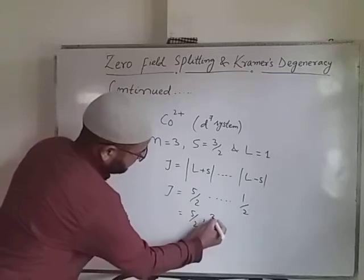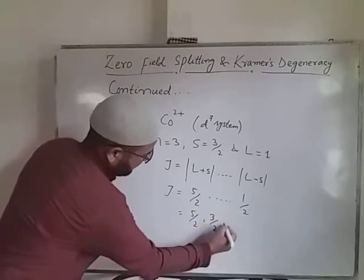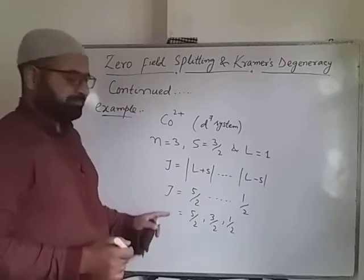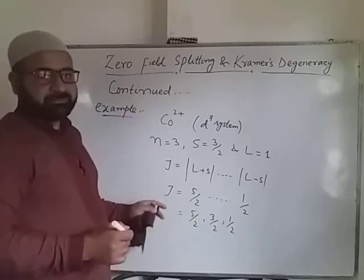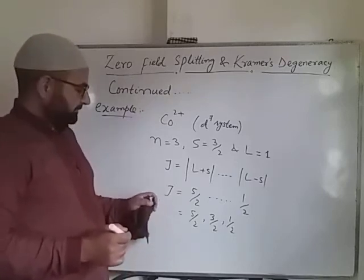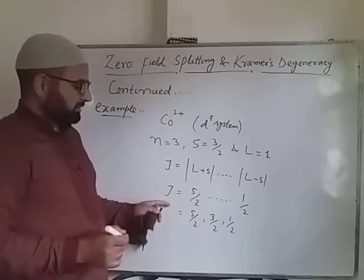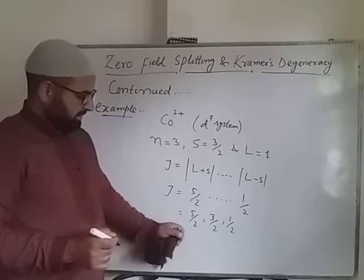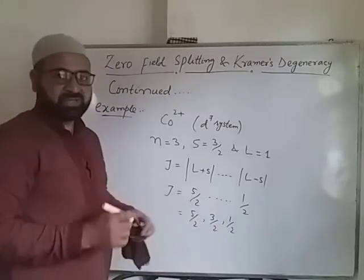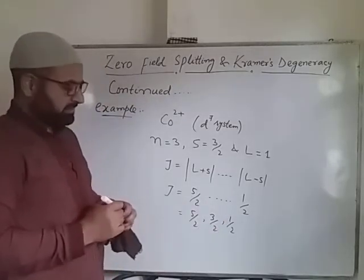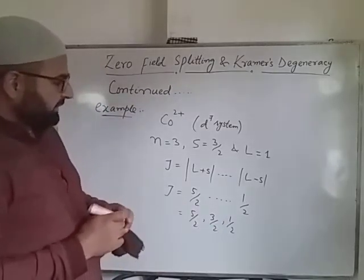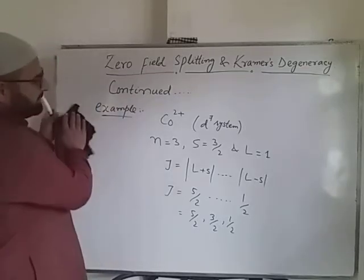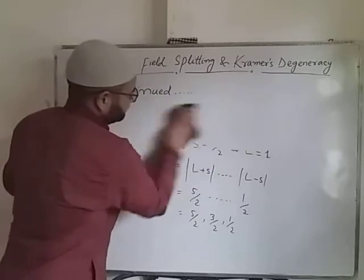So the values of J will be 5/2, 3/2, and 1/2 — three types of total angular momentum quantum numbers. In case of this system, we can now represent how the spectrum will appear.